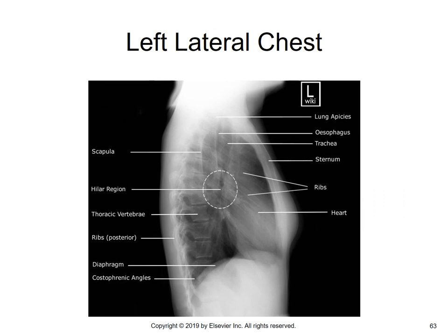Here we've got a labeled lateral of the chest. Look at where the scapulae are, the hilar region, and the superimposed posterior ribs — this is a beautiful lateral where the posterior ribs are truly superimposed. The thoracic vertebrae, the diaphragm, costophrenic angles, and sternum in the front are all visible. The intervertebral foramina are those black little circles behind the vertebrae — you want to make sure you can see those on a lateral chest. This shows all the way from the apices down to the costophrenic angles.